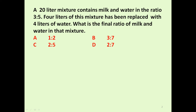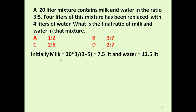To answer this question, first let us determine how much milk and how much water is in this 20 litre mixture. The mixture has milk and water in the ratio 3 to 5, meaning milk is 3 units and water is 5 units out of 8 total units. So initially, milk is 20 into 3 divided by 8, which equals 7.5 litres, and water is 20 minus 7.5, which equals 12.5 litres.